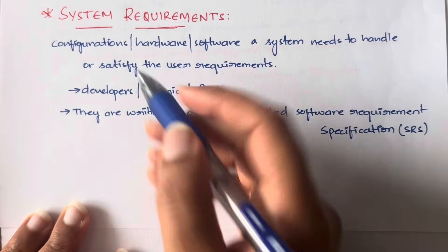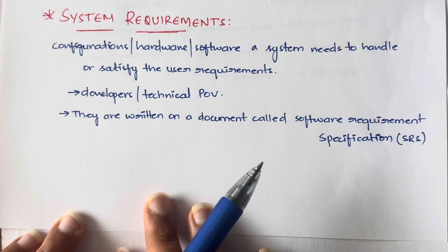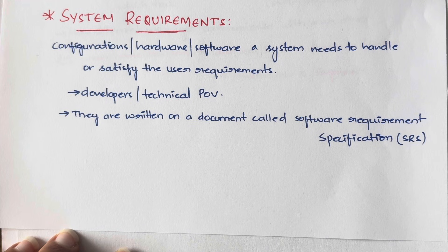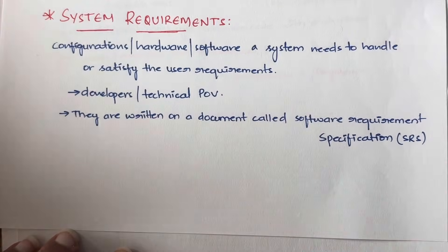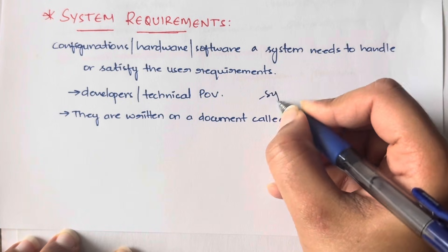First, what is a system requirement? User requirements means the requirements which a user has. System requirements means the requirements that a system needs in order to handle or satisfy the user requirements. So whatever the user is asking, you should be able to do that, and in order to do that you should have some things — like the systems and computers that you have.